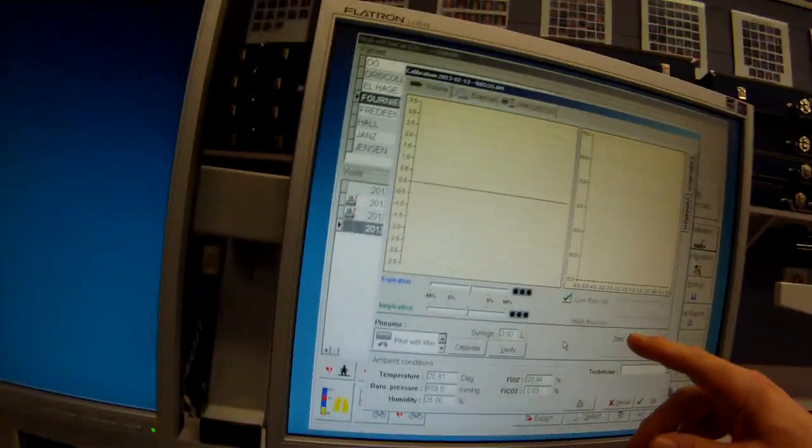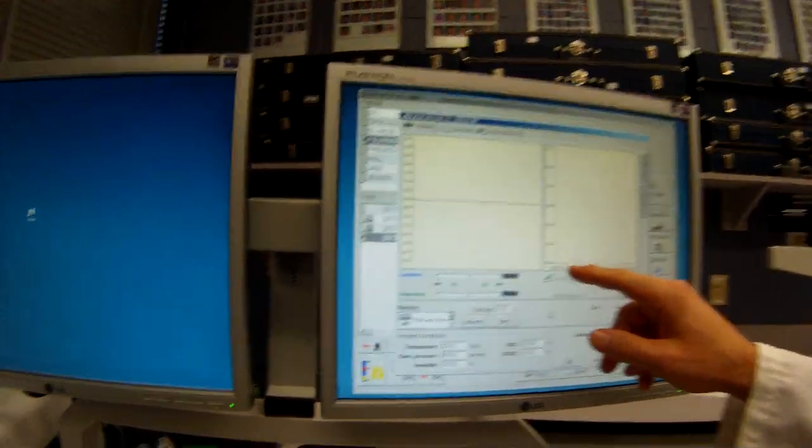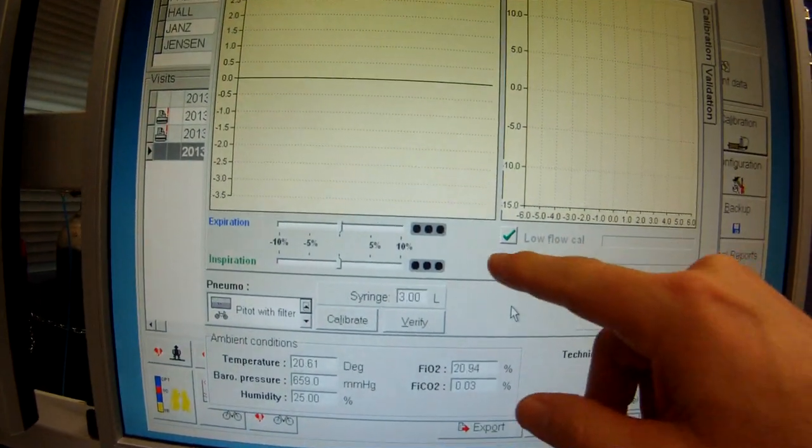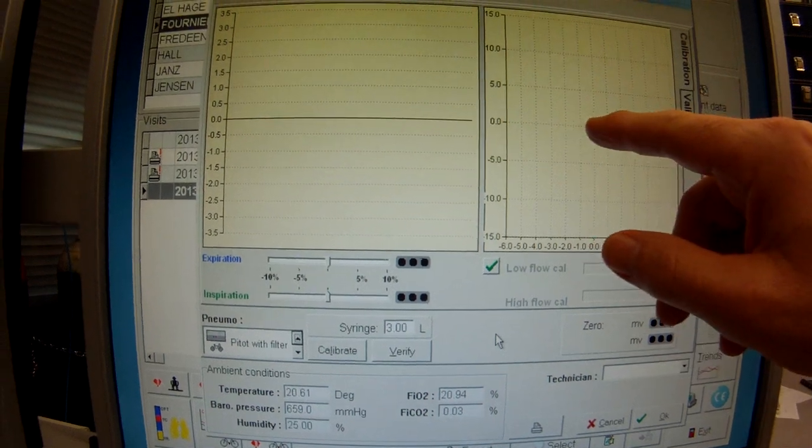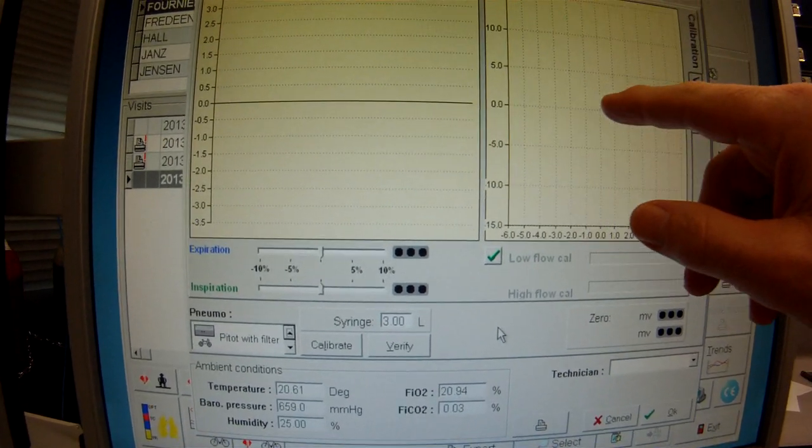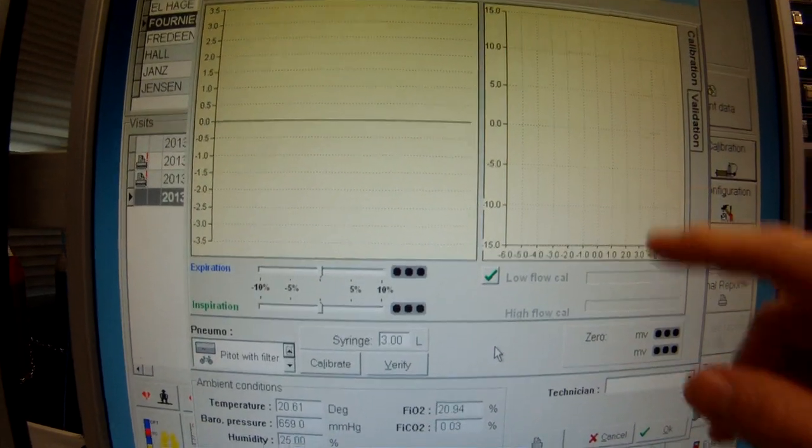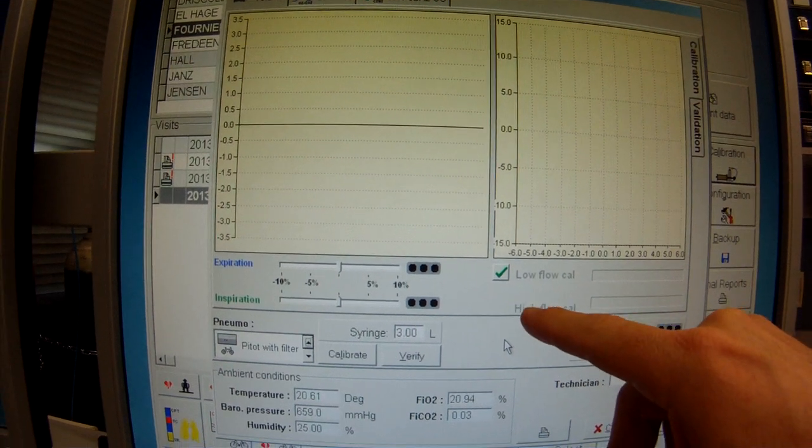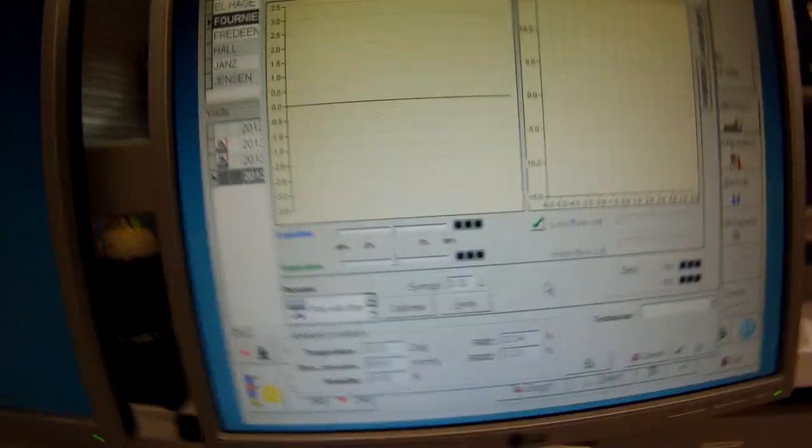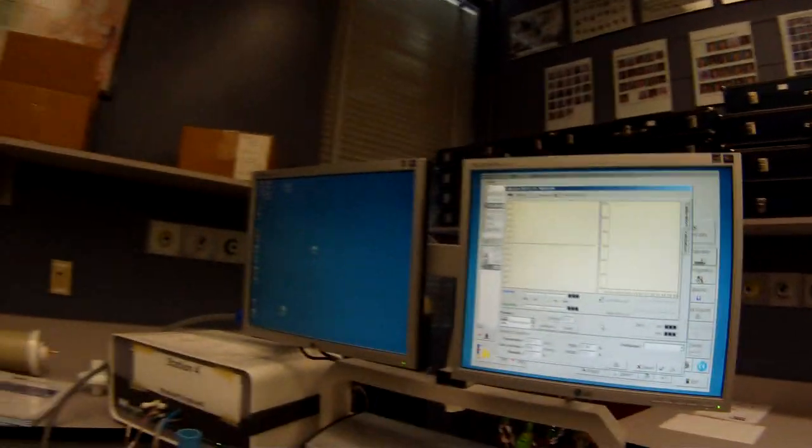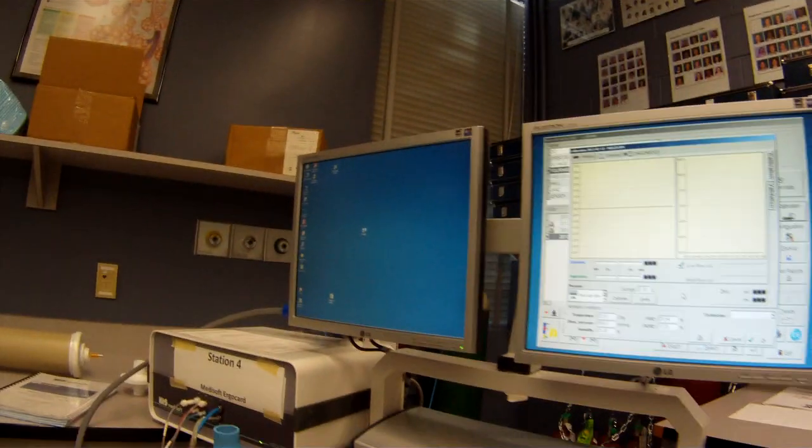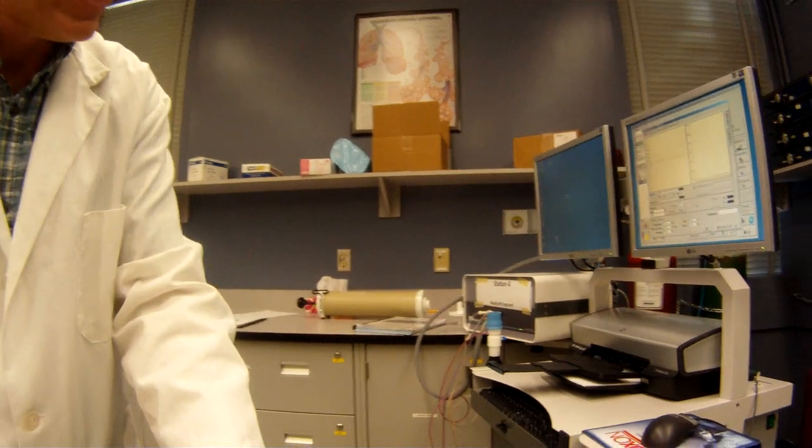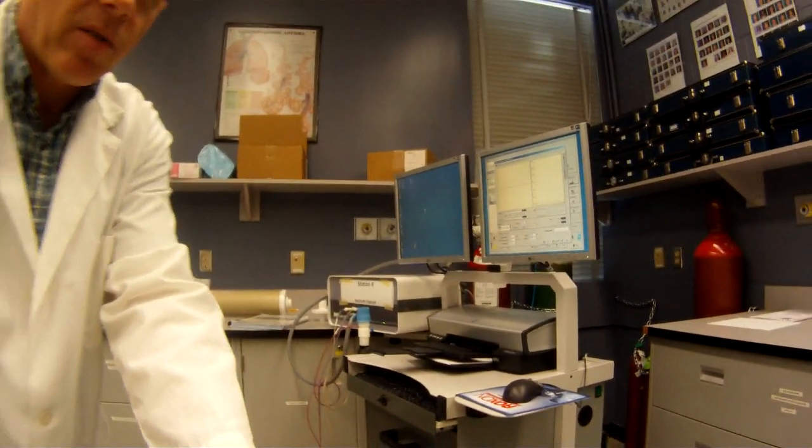Once we get into this here, it shows us our calibration screen. And you notice highlighted is the low flow cal. So initially, we're just going to be doing these little low flow calibrations. And then it'll click over into the high flow. The first round, it doesn't observe anything. It just gives us like a practice warm-up round. So I'll sit you there, just like that. And you can watch us do our calibration here.